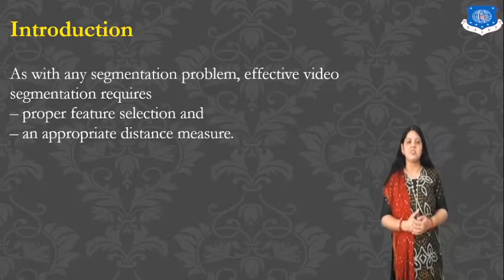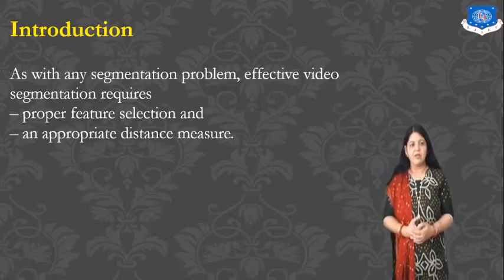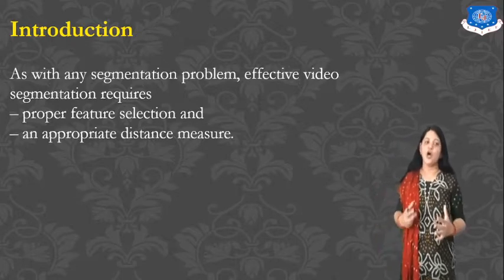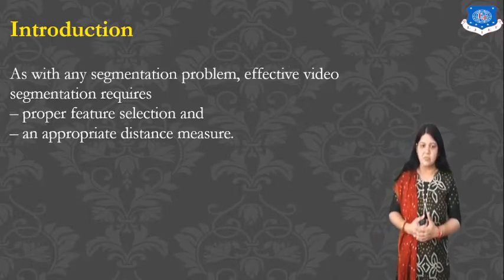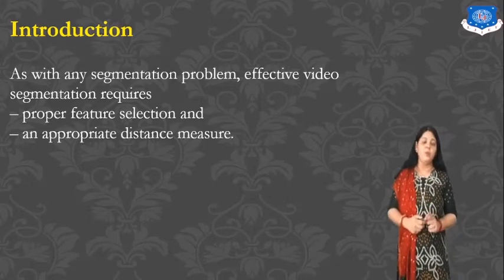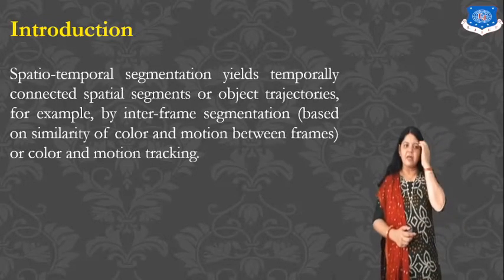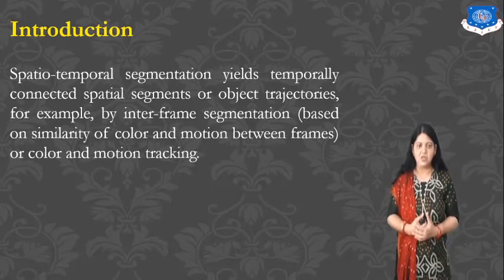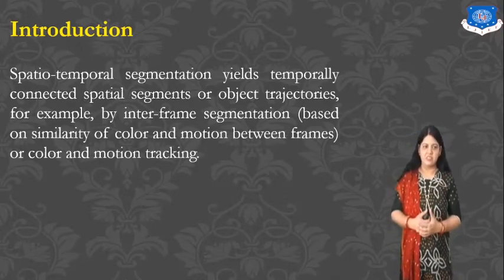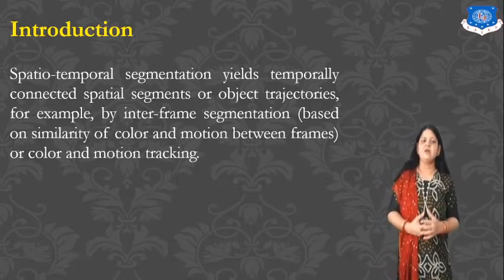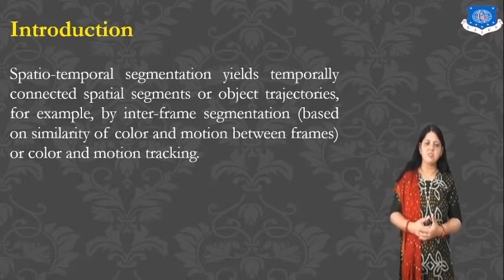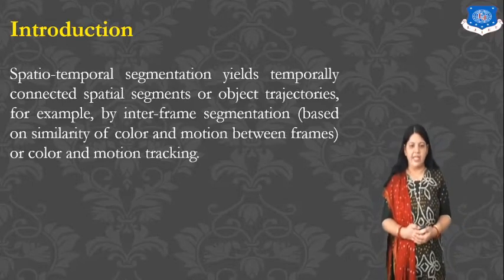As with any segmentation problem, effective video segmentation requires two important things: proper feature selection, where features need to be selected properly, and an appropriate distance measure — the distance between two particular frames or two particular pixels. Spatiotemporal segmentation is temporally corrected spatial segmentation, or object trajectories, such as inter-frame segmentation based on similarity of color and motion between frames.